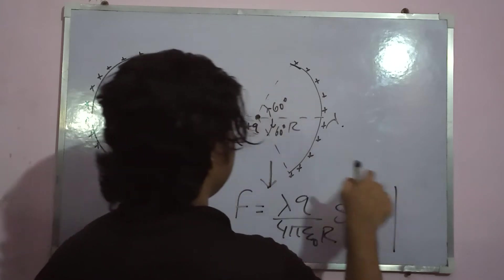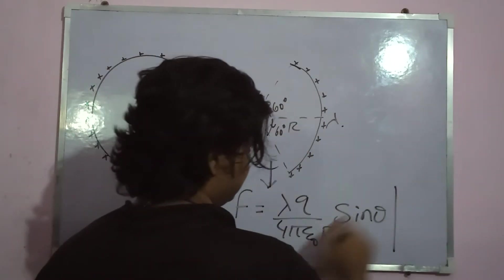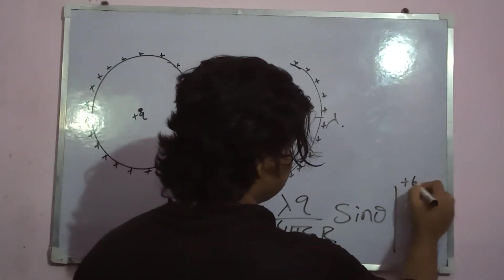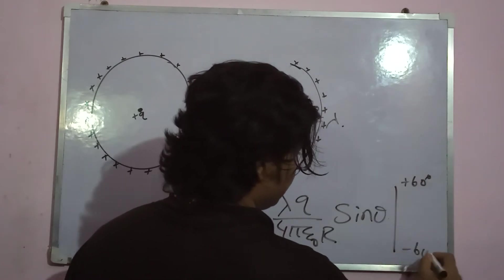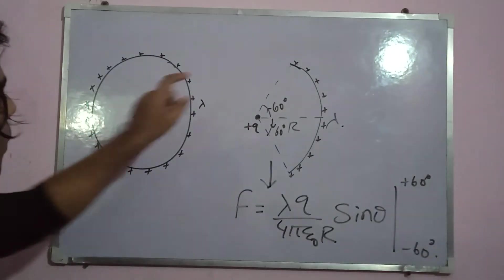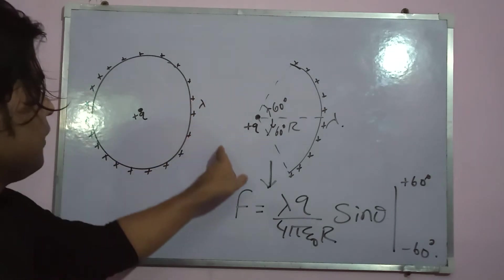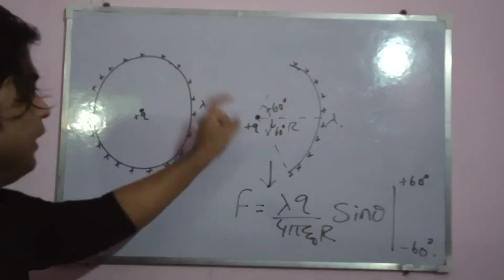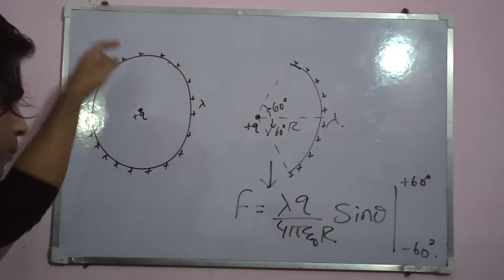Force experienced by this plus q is equal to lambda q by 4 pi epsilon naught r sine theta. Put the limits here 60, here 60. I am going to solve this problem by this because as I complete this arc in a circular track, it will give me this problem.